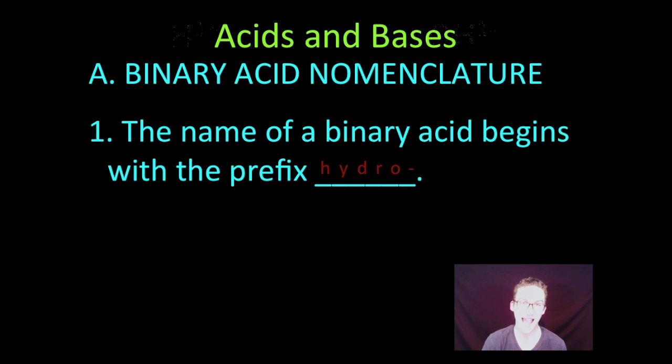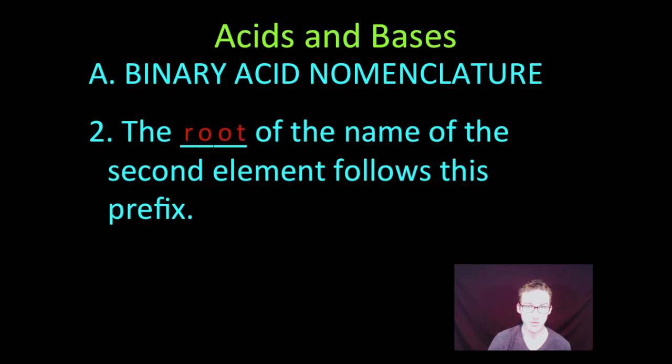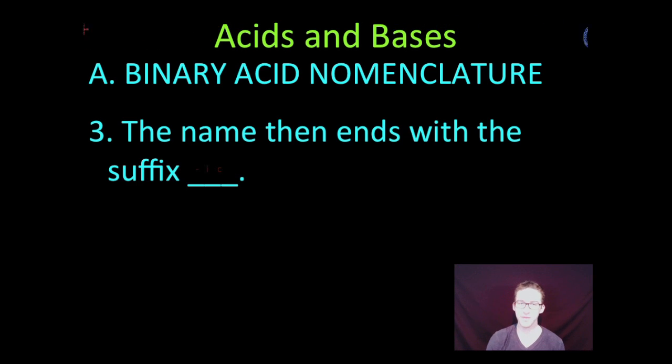So we are going to start with some acid nomenclature. The first thing we're going to talk about is binary acid nomenclature. Binary, of course, implies that we're talking about two things. One of those things for an acid is going to be the hydrogen ion. So, when you write the name of a binary acid, you're always going to begin with the prefix hydro. Second thing is you're going to take the root of the name of the second element that is not hydrogen, and that root is going to follow the prefix hydro. And then, three, you are going to change the name so that it ends with the suffix, ic.